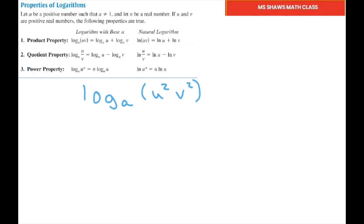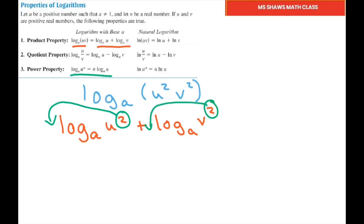Alright, so let's get started. For this one, we're going to expand it like that first. Log base a of u squared plus log base a of v squared. Now, to expand completely, we have to use our power property. So I'm going to move this 2 in front here and also this 2. So 2 times log base a of u plus 2 times log base a of v.